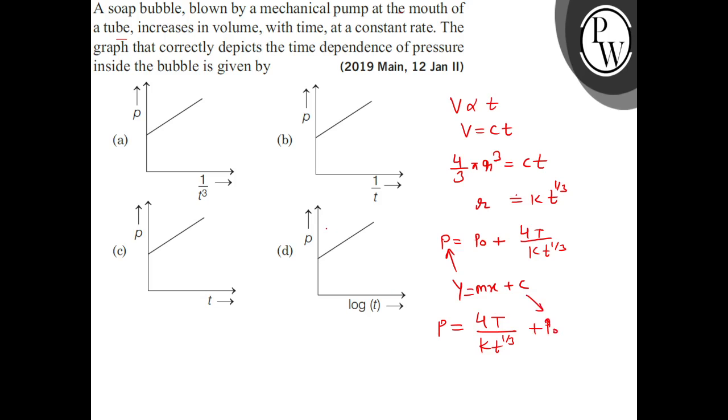P0 is the intercept, positive intercept. The slope is also positive because surface tension is positive, k is also positive. So the graph is P and 1 by t raised to 1 by 3. This graph is this way, which means P and 1 upon t raised to 1 by 3. So according to options, this option is 1 upon t raised to 1 by 3, and this option is correct.